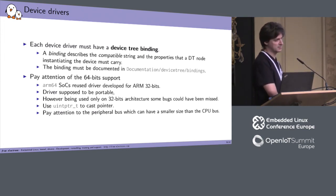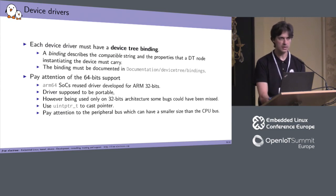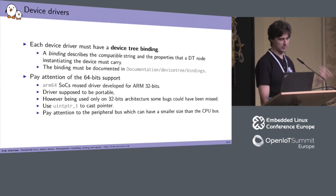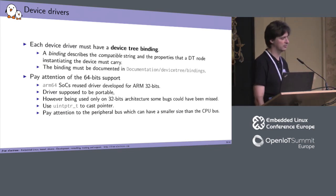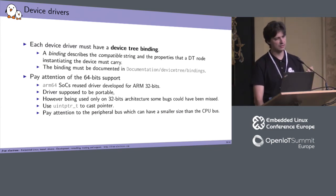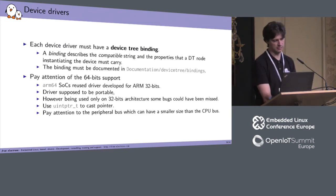For example, use uintptr_t to cast pointers. Until now you could just do a void* and it was okay — there was no problem. Now you have to do it properly. Also, you have to pay attention that the peripheral bus can have a smaller size than the CPU bus. On many peripheral ICs, they still use a 32-bit bus. So you still use writel or readl, and the data size you use — you have to really specify U32 or __le32 to be sure it matches the size of your physical peripheral bus.